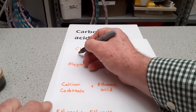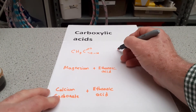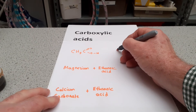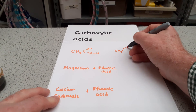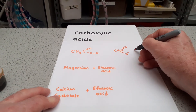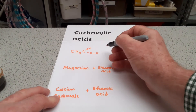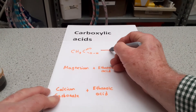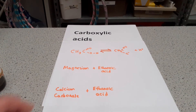Ethanoic acid is a weak acid. All acids, when put into water, ionise — and this would ionise accordingly. The reason why it's a weak acid is that it recombines. That's the reason it's much weaker than hydrochloric acid.